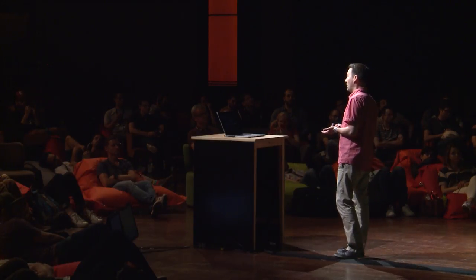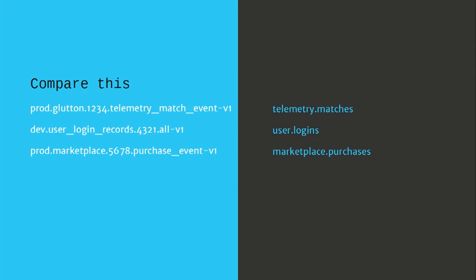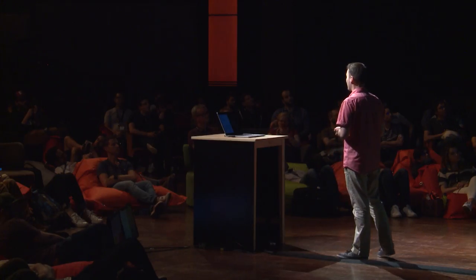What kind of solution can you apply here? There are a few different ways to fix it, but I think a proper solution was actually invented many decades ago — just think about databases. Because a messaging system like Kafka is a form of a database. When you need to think about how to name a topic, you can think about a database name and a table name from a relational perspective, or more generically, some sort of namespace and a data type. If we apply this new convention to the topics we have, on the left side you see all the existing topic names, on the right side this new proposed convention — it looks really straightforward and you can immediately understand what it contains. It's very precise — just the data type you want.